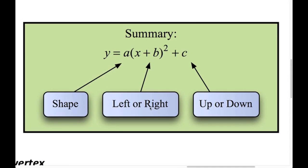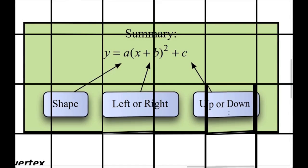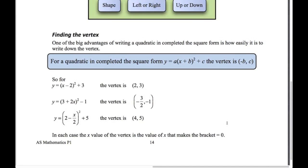Here's the summary. For a quadratic written in completed the square form, the A changes the shape of the graph — skinnier or wider — the B makes it go left or right, and the C moves it up or down. One great advantage of this form is we can easily read off the vertex, which the syllabus says we should be able to do. The vertex is just minus B and C — the value of x that makes that bracket zero, and just the value of C. The A makes no difference to where the vertex is.